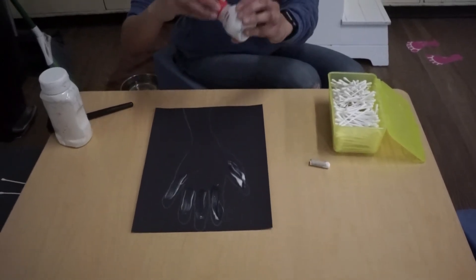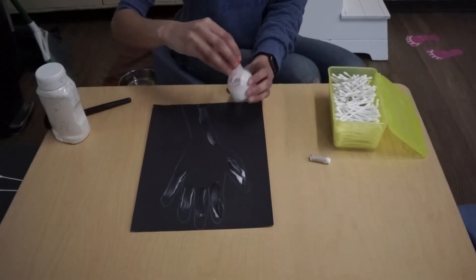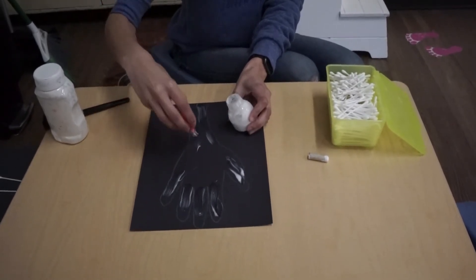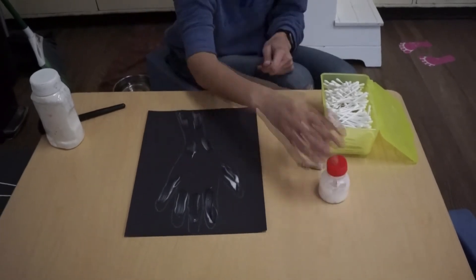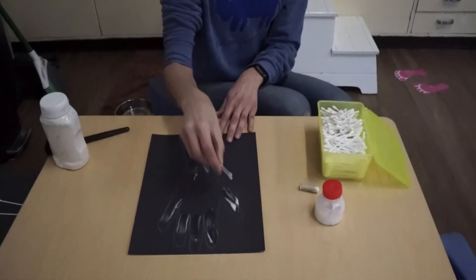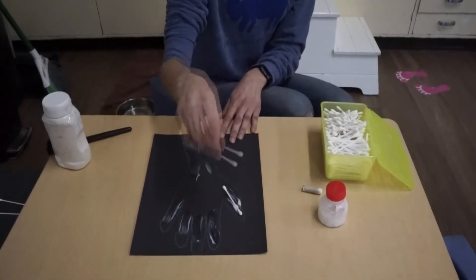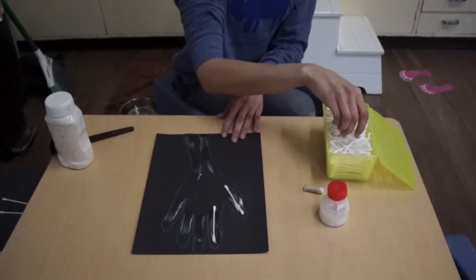And I'm also going to put glue on my arm because I have bones in my arm too. After you've done your glue, you will take your q-tips and place them in the glue to create your skeleton bones.